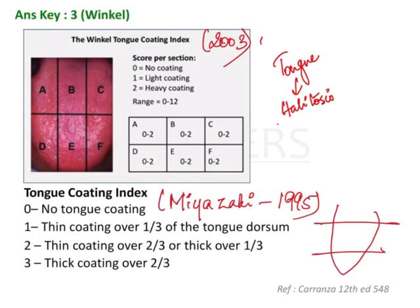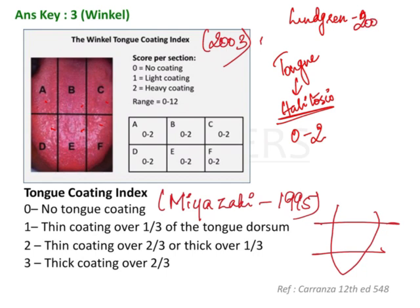The answer for this question is that the tongue coating index was given by Winkle. This index was formed primarily for halitosis. What he did was divide the tongue into six sections, and on each section there was a scoring of 0 to 2.